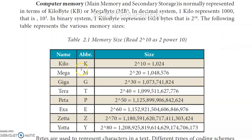So 1 kilobyte is 2 power 10, which is 1024. Megabyte is 2 power 20, gigabyte is 2 power 30, terabyte is 2 power 40, petabyte is 2 power 50, exabyte is 2 power 60, zettabyte is 2 power 70, and yottabyte is 2 power 80.